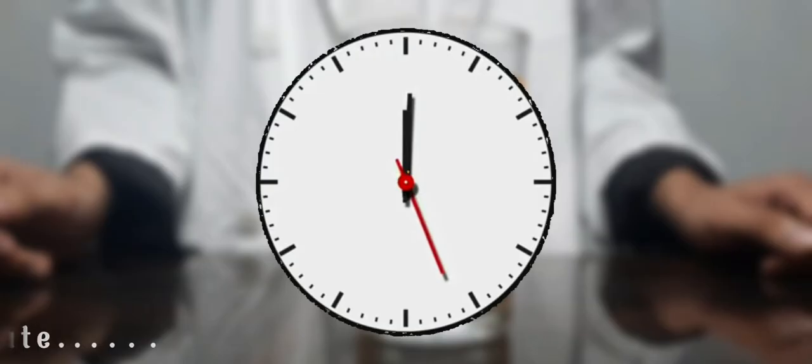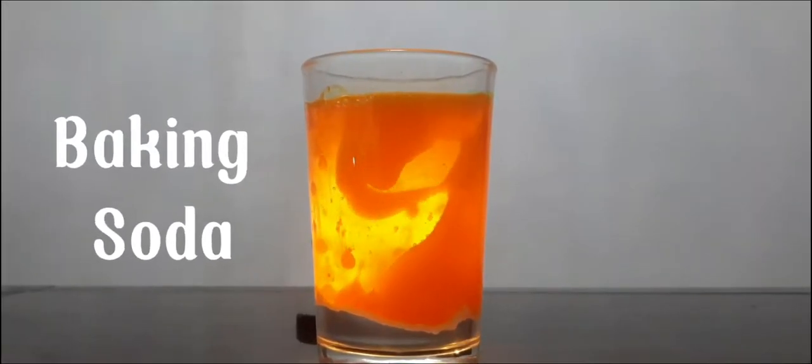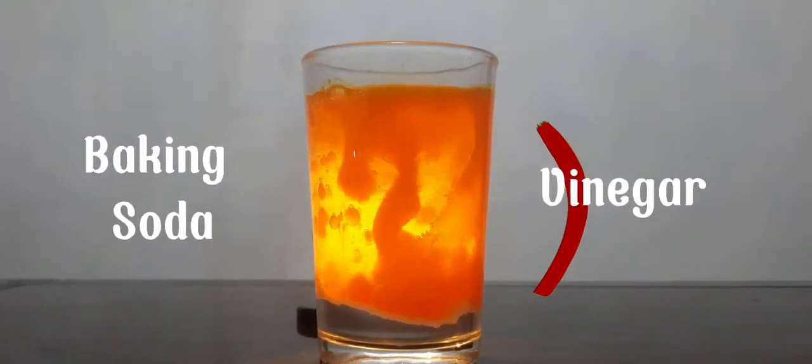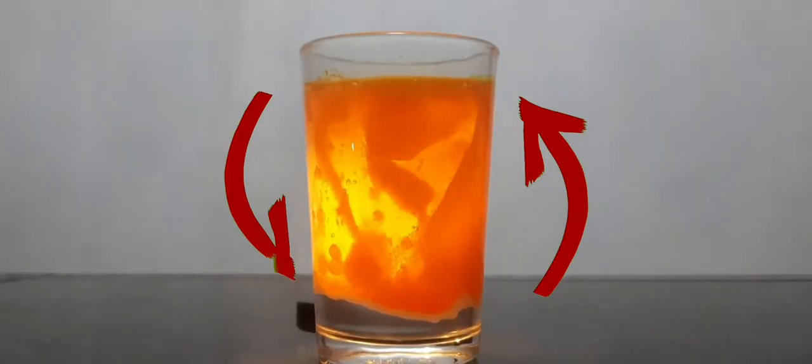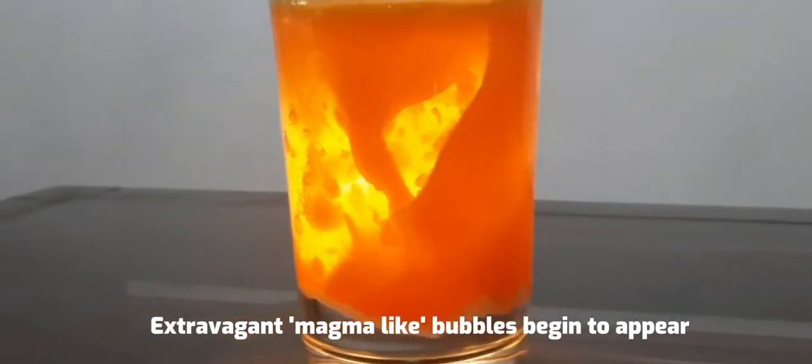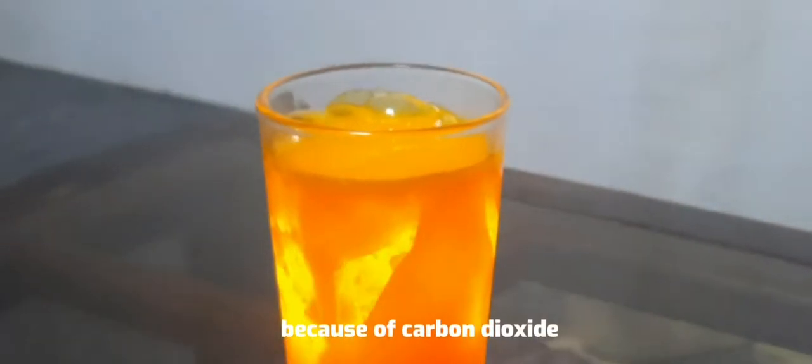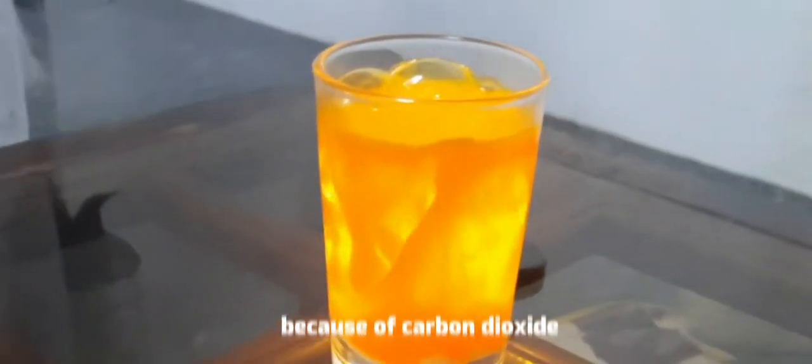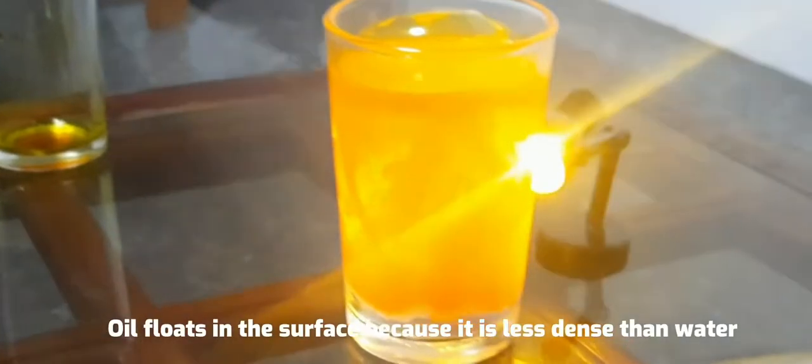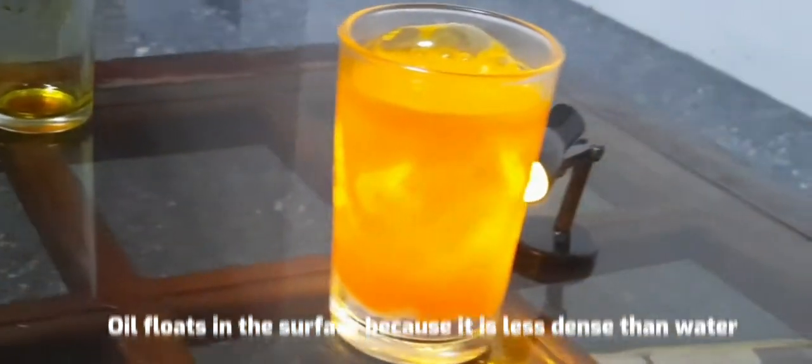And kaboom! The baking soda reacts with the vinegar that causes it to rise up and sink down. Extravagant magma-like bubbles begin to appear because of carbon dioxide. Oil floats on the surface because it is less dense than water.